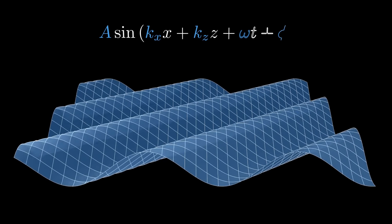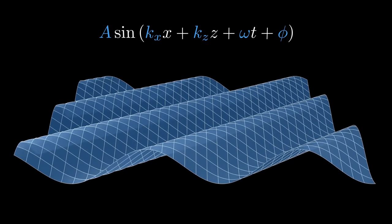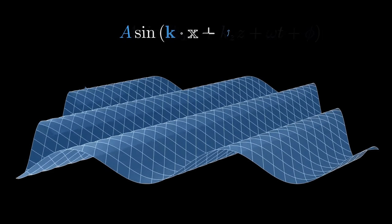If we add another coordinate, we get a two-dimensional sine wave. Two wave numbers constitute a wave vector. It determines both direction and length of the wave.